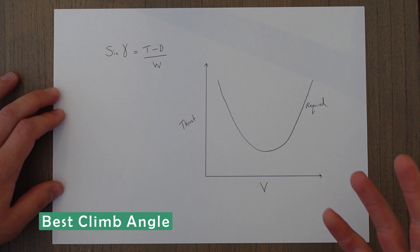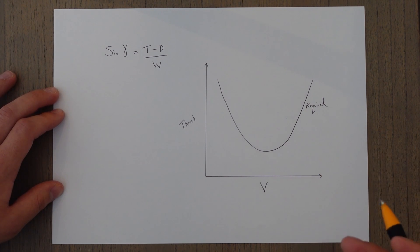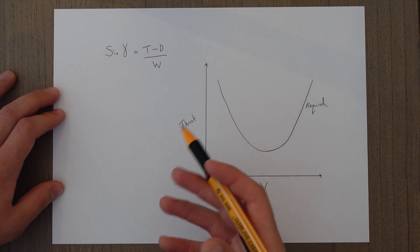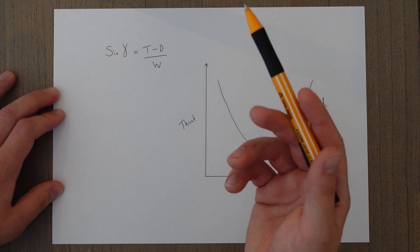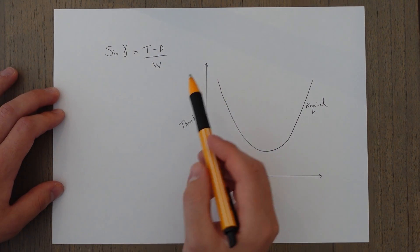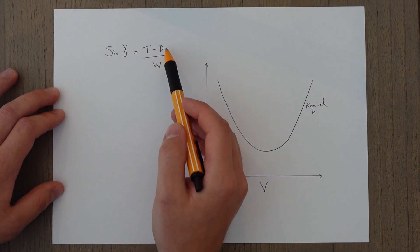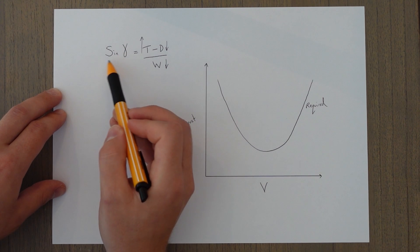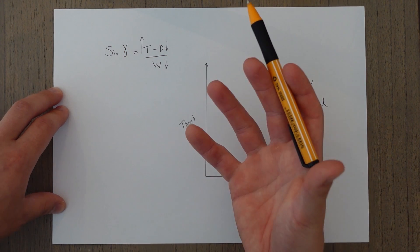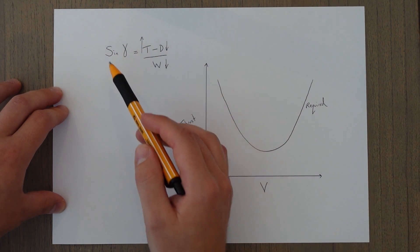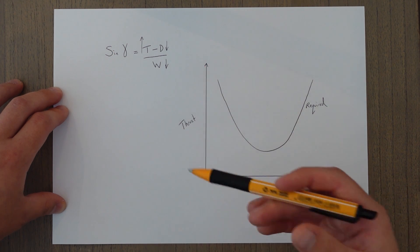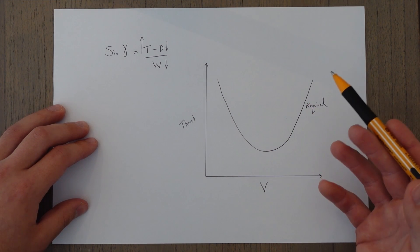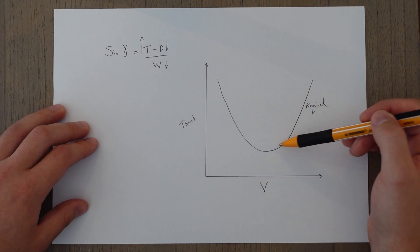The best angle of climb depends on the amount of excess thrust available. The thrust has to overcome the drag and also the component W × sine gamma. Rearranging the formula gives: sine gamma equals thrust minus drag over weight. To maximize the climb angle we maximize thrust, reduce drag, and reduce weight. The amount of required thrust is simply the amount needed to overcome the total drag of the aircraft, so we essentially draw the total drag curve.